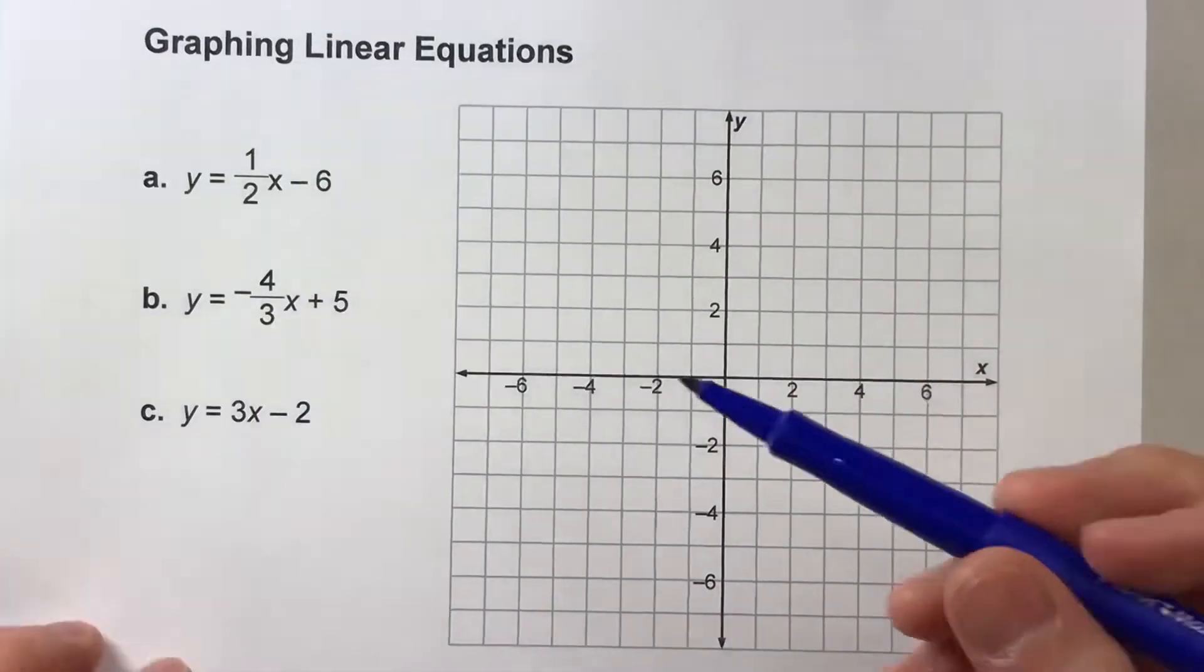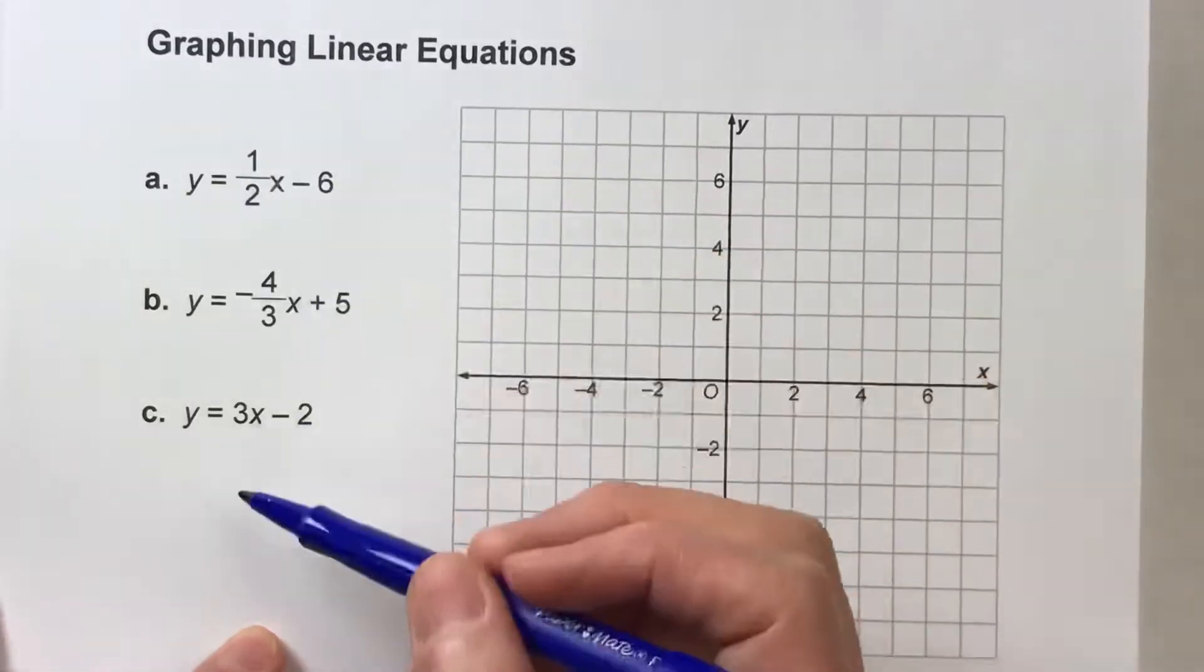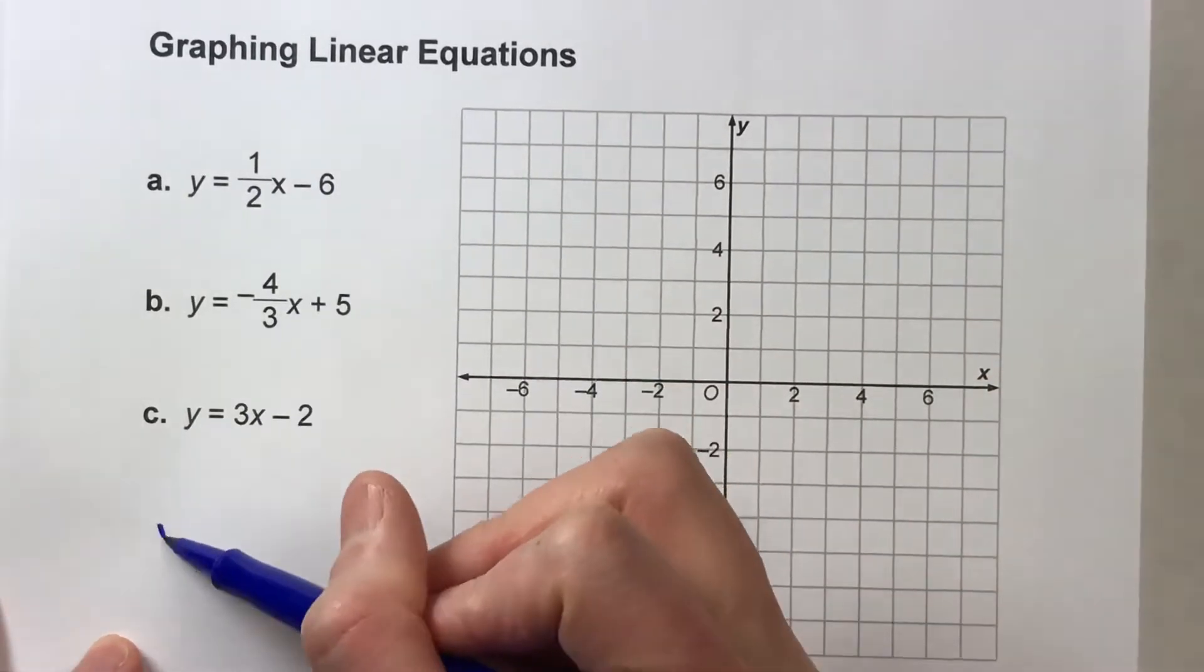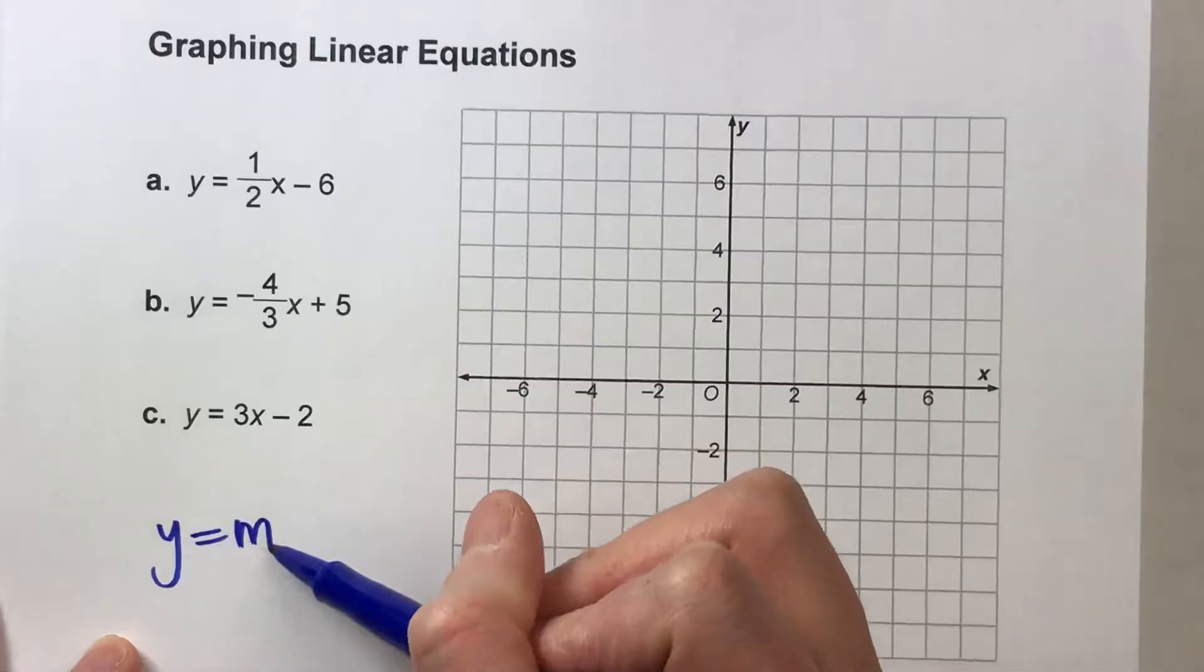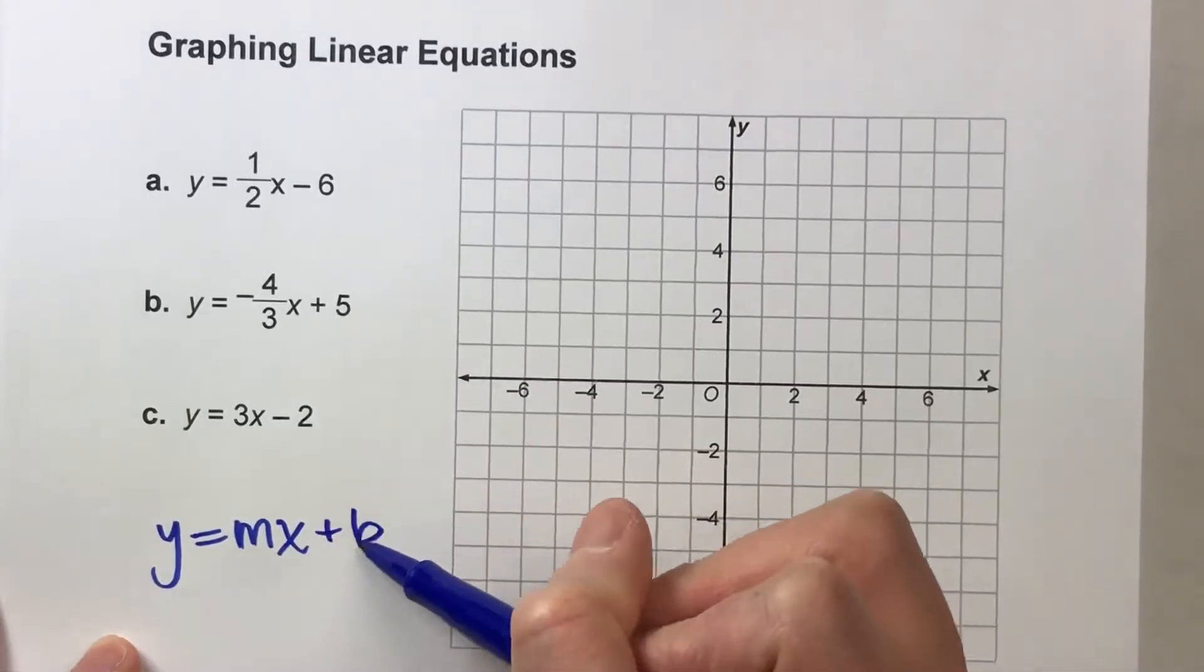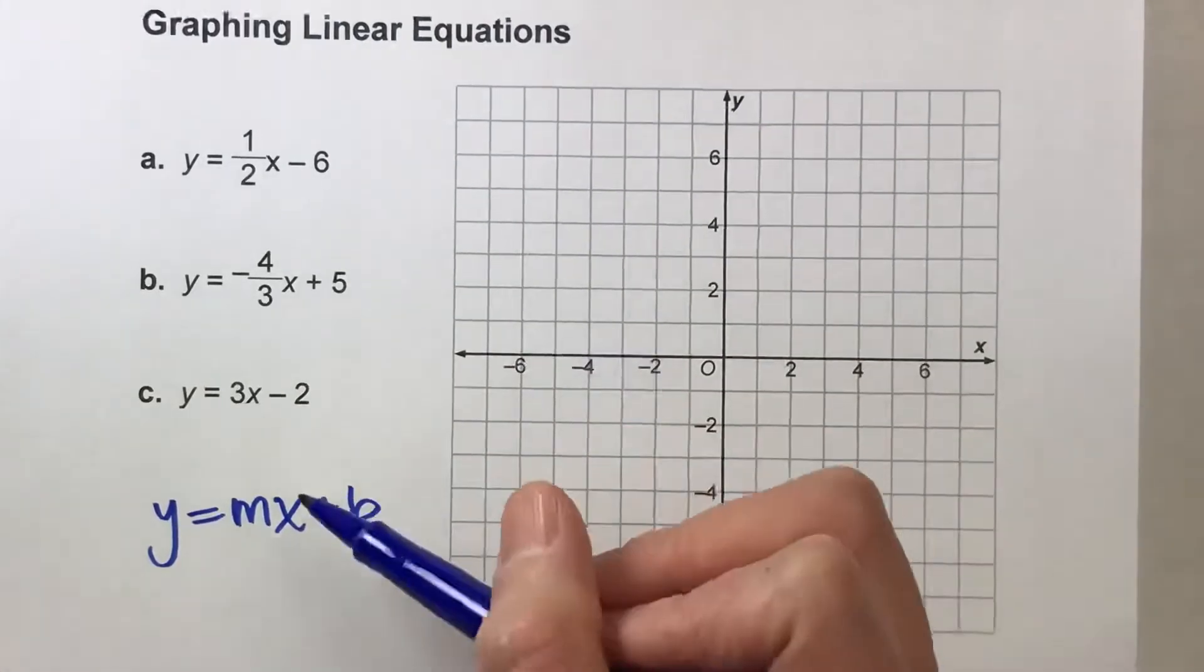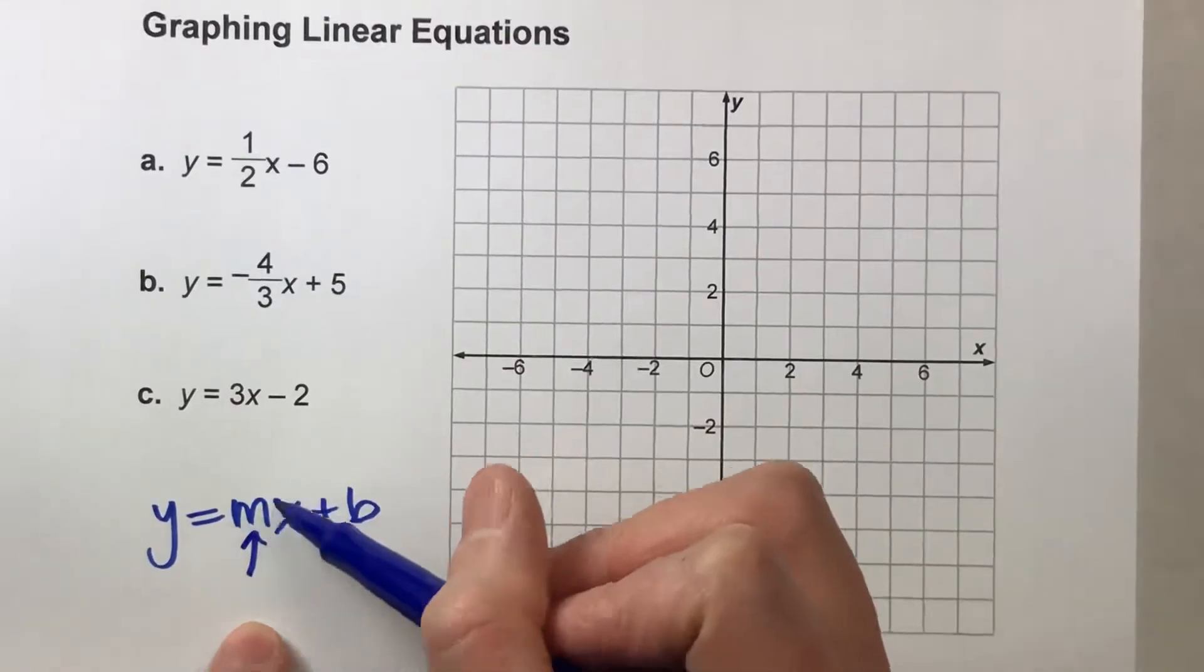Now, before we do that, just remember that linear equations like these are in slope-intercept form, meaning they are in the form of y equals mx plus b, where the number next to x, represented with the m here,